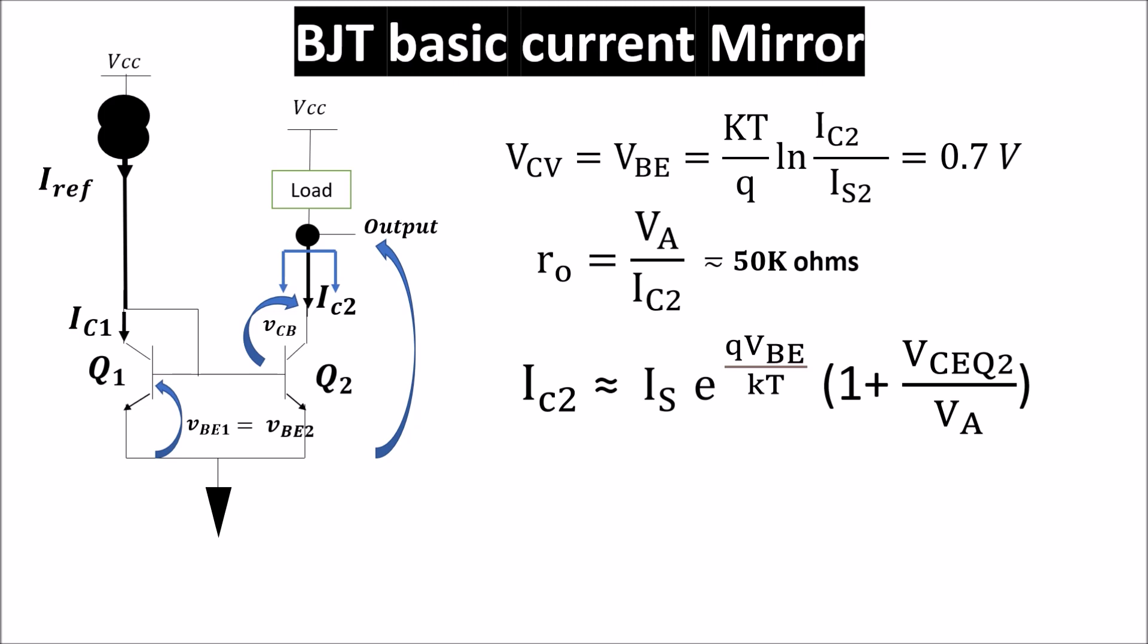So basic BJT current mirrors suffer of some mismatch or errors, in particular the current transfer ratio and the finite output resistance. In next videos we'll see some ways to improve these two issues.